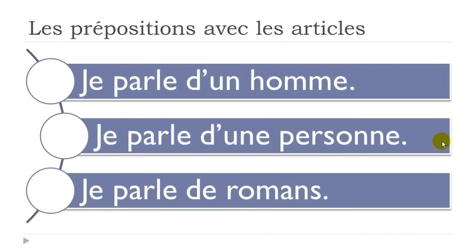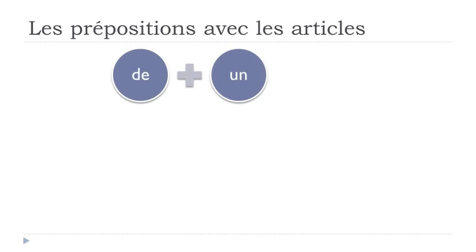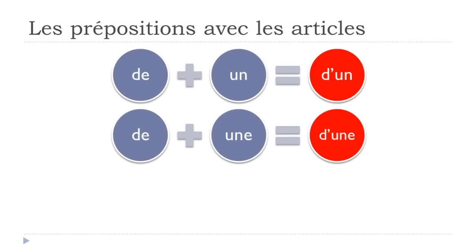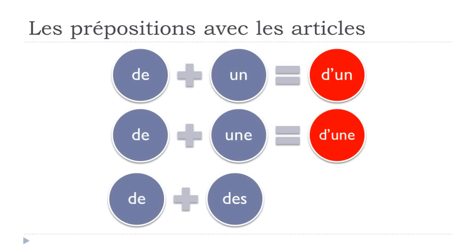The tricky part is when you combine DE and DES. It would sound strange to have 'de des romans,' so the article DES disappears entirely, giving you just de. So remember: DE plus UN becomes D'UN; DE plus UNE becomes D'UNE; and DE plus DES — the DES is taken away.